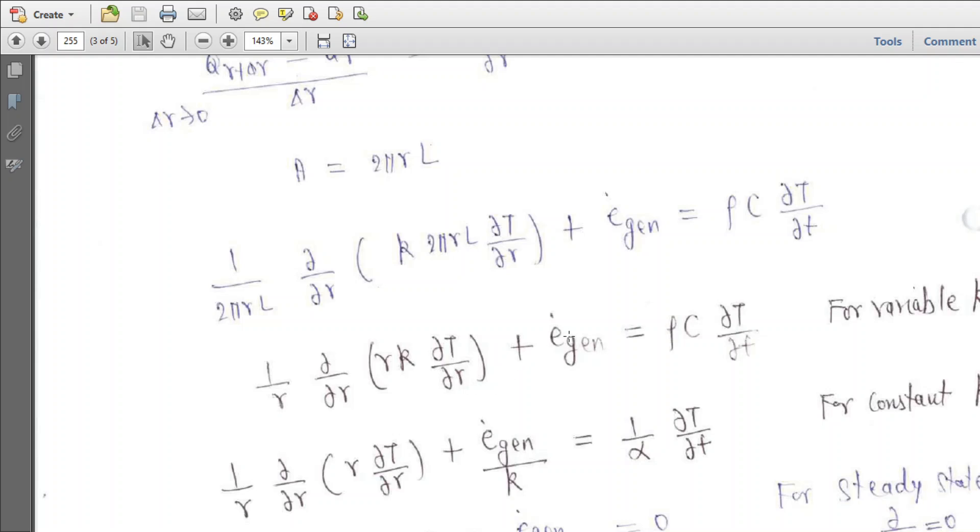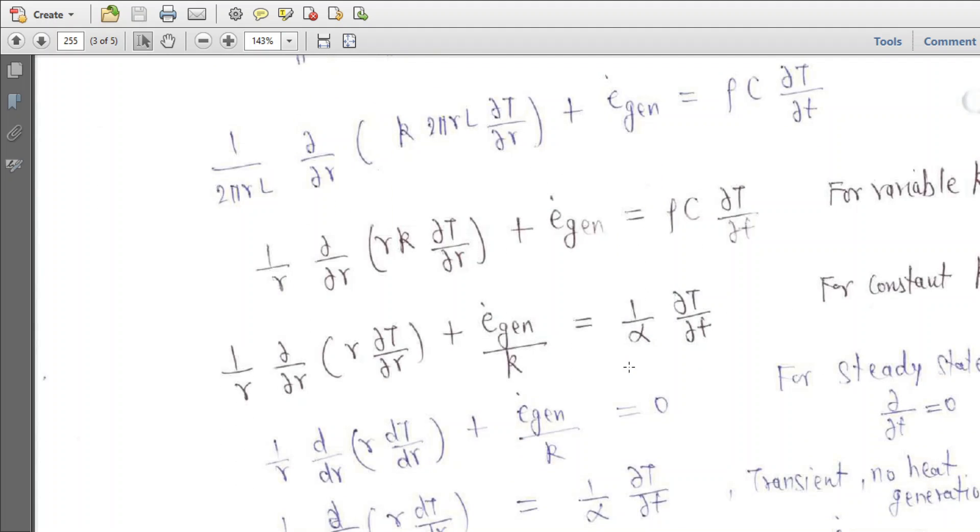For constant conductivity, take K common. Then divide the entire equation by K. You will get a term K/(ρc_p), which is known as thermal diffusivity α. For steady state, this side is zero.